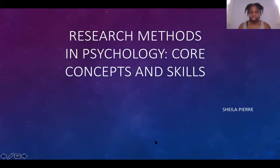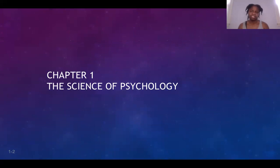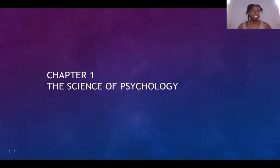Chapter one — for some of you, depending on the book version you have, is entitled 'The Science of Psychology.' However, if you have the updated version, which was updated as of December 2019 / January 2020, your chapter is entitled 'Scientific Psychology.' It's the same thing — the titles have just changed for the updated version.